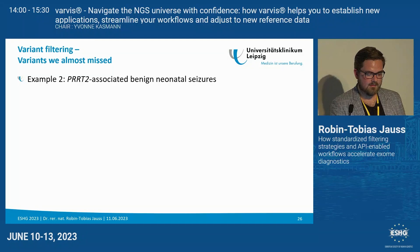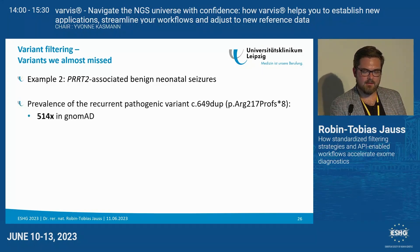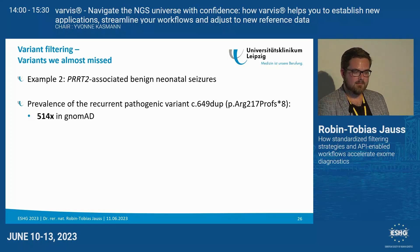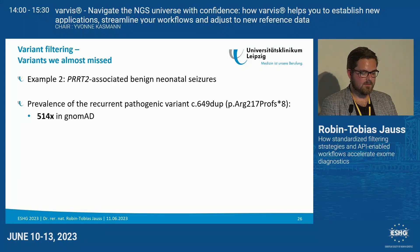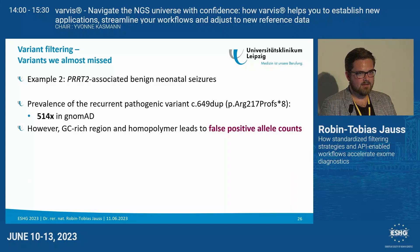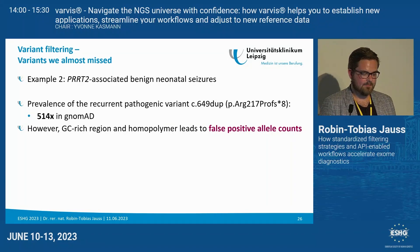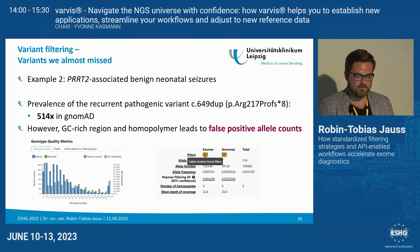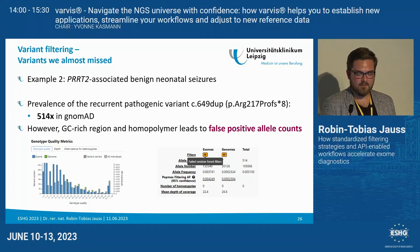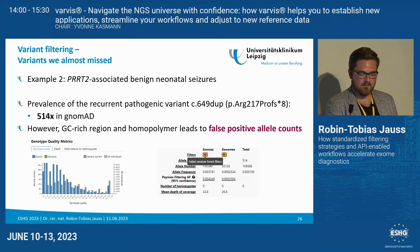Another example is PRRT2-associated benign neonatal seizure disorder. We have a recurrent pathogenic variant found more than 500 times in gnomAD. But here the problem is that this variant lies in a very GC-rich region in a homo-C polymer and these allele counts in gnomAD are in fact false positives — as gnomAD itself indicates, the variant fails the random forest filters. Filtering for variant prevalence might have excluded this variant.